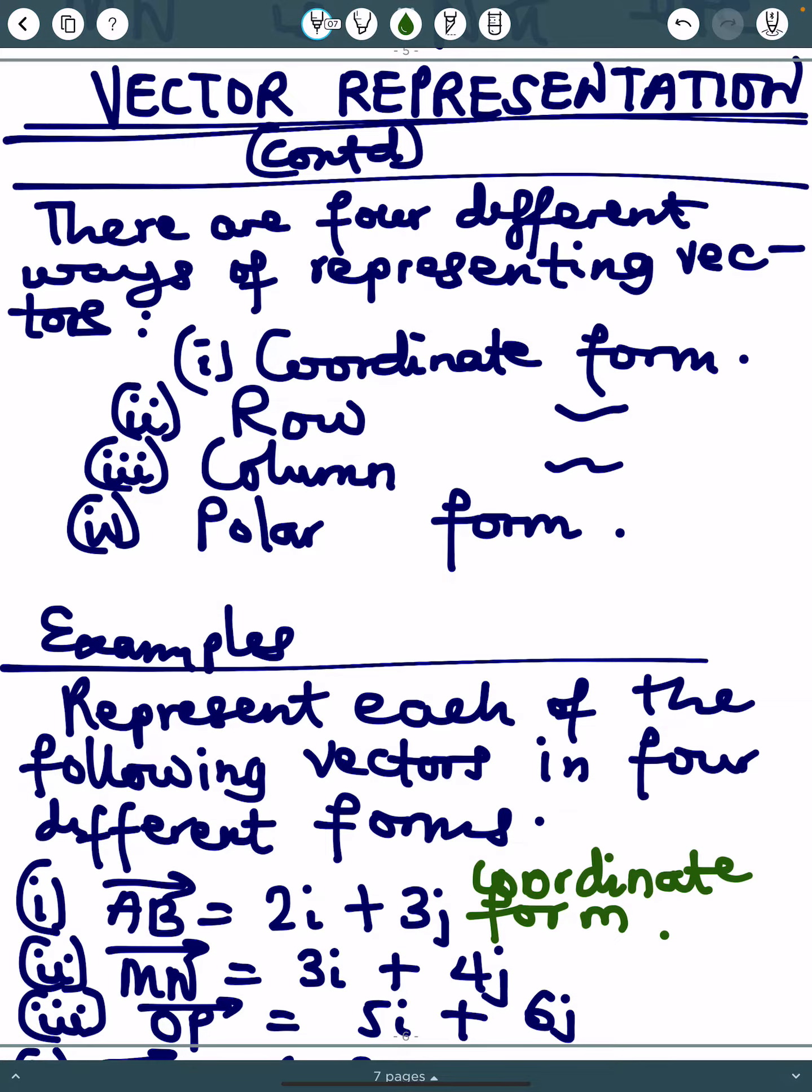This vector AB in Roman numeral i is in coordinate form, but I can write it easily in row form by just writing (2,3) in brackets. This MN is in coordinate form. I can write it in polar form, in column form, or in row form.